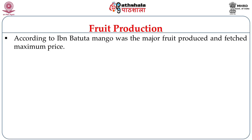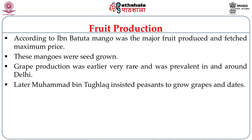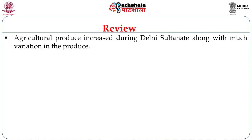In fruit production, this period also saw revolutionary change. According to Ibn Battuta, mango was the major fruit produced and fetched the maximum price, though this was definitely the seed-grown variety. Grape production was earlier very rare, but with the initiative of the Tughluqs, grapes and grapevines became a primary fruit produce. Mohammed bin Tughluq is also believed to have initiated the production of dates.